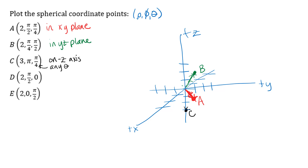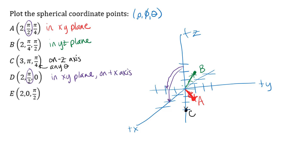For point D, phi equals pi over 2 again puts us in the XY plane. Theta equals zero means no rotation from the positive X axis, so this point is on the positive X axis. Going out rho equals 2 units from the origin, point D is two units out on the positive X axis.